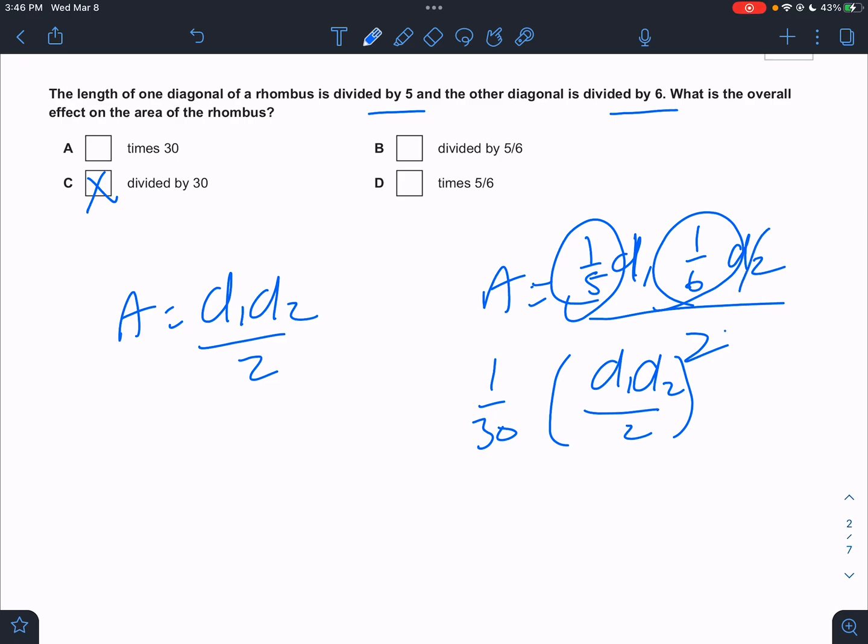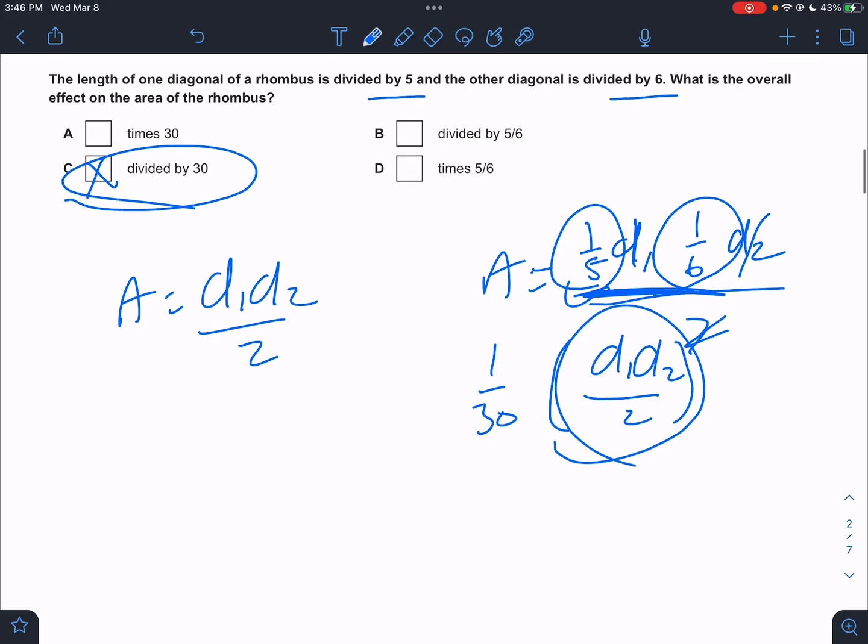Yep. So D1, D2 divided by 2 is still there, but we have a times one over 30 going on. So if that's the case, it'd be divided by 30. Times one over 30 or divided by 30 is the same thing. That would be the overall effect on the rhombus.